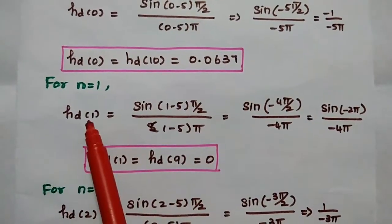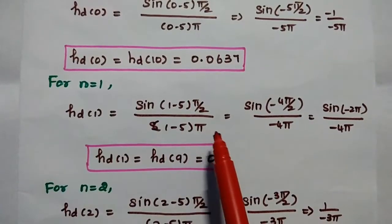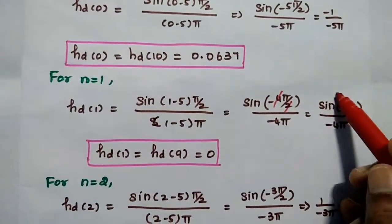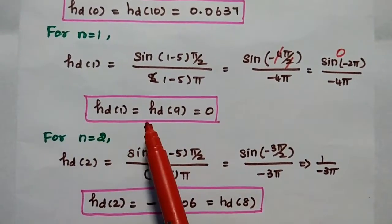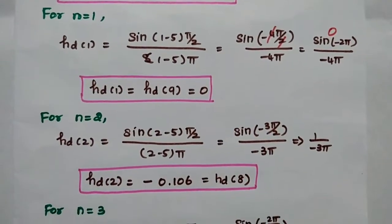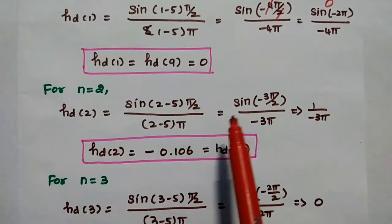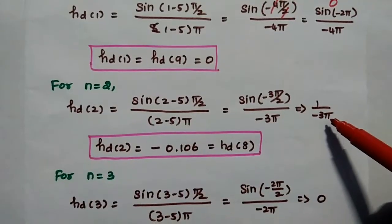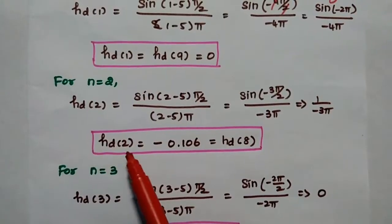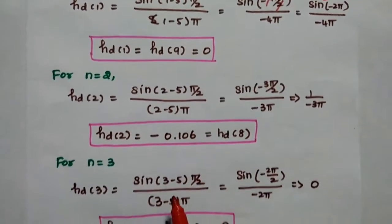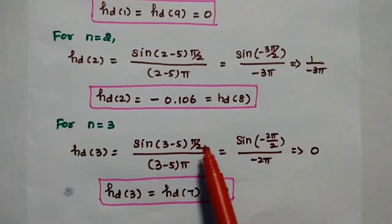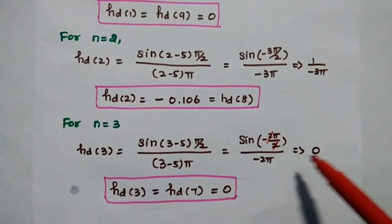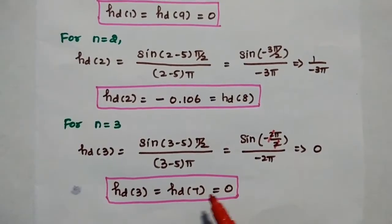For n = 1: hd(1) = sin((1−5)π/2) / (1−5)π = sin(−4π/2) / (−4π) = sin(−2π). Since sin(2π) = 0, hd(1) = hd(9) = 0. For n = 2: hd(2) = sin(−3π/2) / (−3π). Since sin(−3π/2) = 1, this gives 1/(−3π) = −0.106, so hd(2) = hd(8) = −0.106. For n = 3: hd(3) = sin(−2π/2) / (−2π) = sin(−π). Since sin(π) = 0, hd(3) = hd(7) = 0.